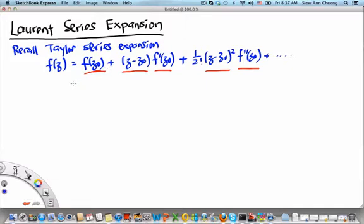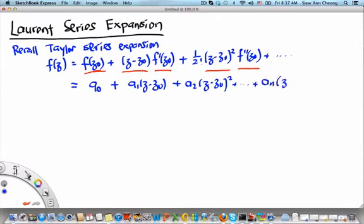let us write this as a0 plus a1(z - z0) plus a2(z - z0)², and so on. In general, the nth order term will be an(z - z0)^n.